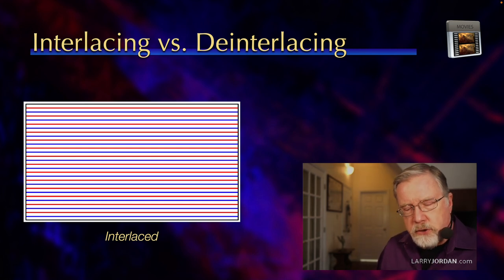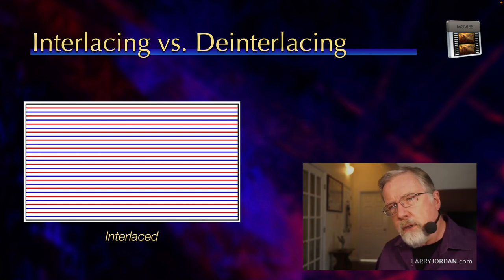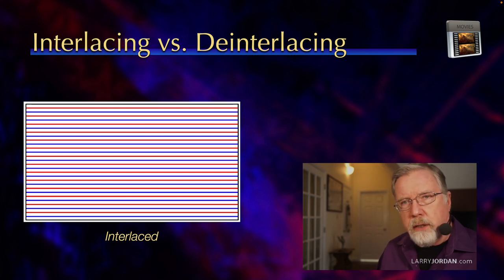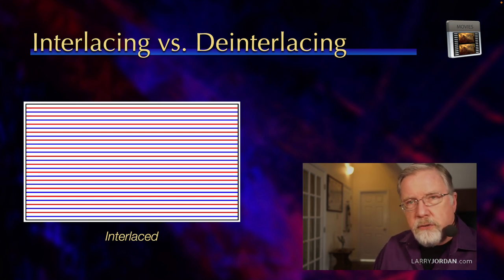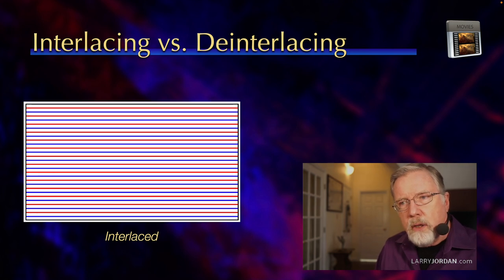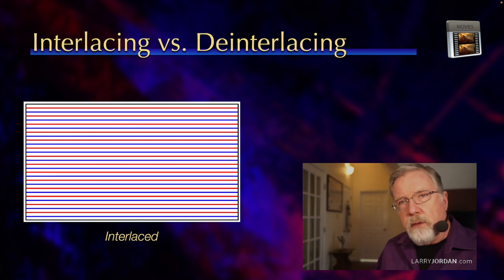An interlaced image — which is true for all NTSC, all PAL, and some HD — first records all of the odd-numbered lines (that's the red line), then, a fraction of a second later, it records all the blue lines. It's that fraction of a second difference that makes the difference. Because when I display these two interlaced fields a fraction of a second apart on a TV set, they look great. But each field — which is half the odd lines or half the even lines — is offset in time. In order to see the entire picture, you have to see both fields at the same time.